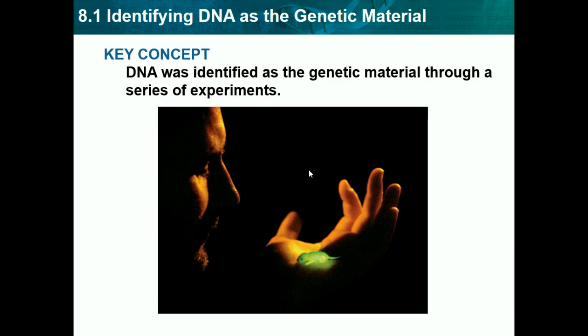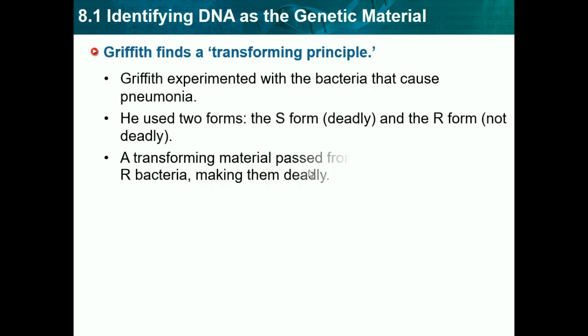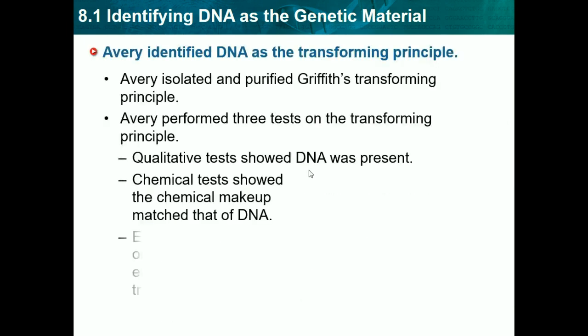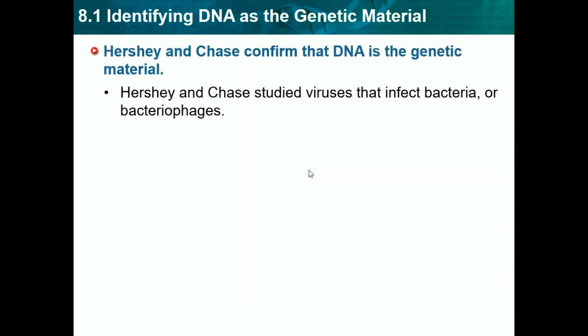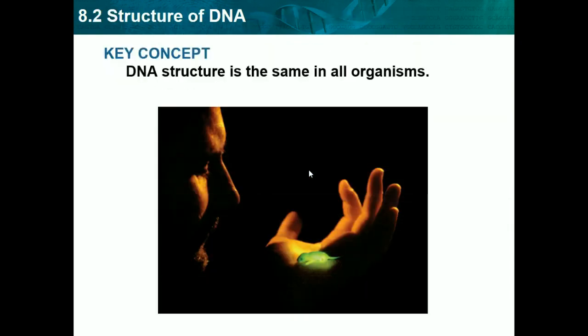We'll start with 8.1, which is identifying DNA as the genetic material. DNA was identified as the genetic material through a series of experiments. This lesson talks about scientists and how they figured out why DNA was the genetic material, and that it was universal through all animals. It leads to chapter 2, which talks about what DNA basically is.